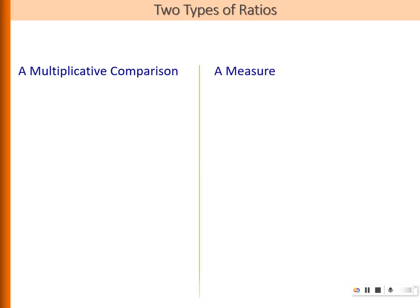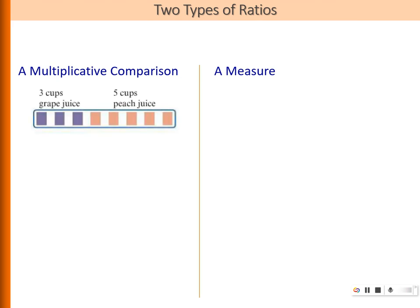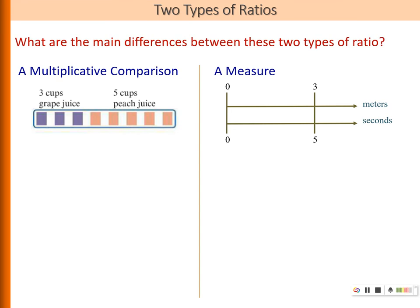Let's take a look at two types of ratios. One is ratio as a multiplicative comparison; the other one is ratio as a measure. For ratio as a multiplicative comparison, we are essentially comparing two different quantities. Whereas for a measure, we are relating two quantities. What do you think are the differences between these two types?